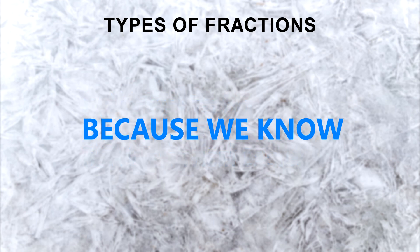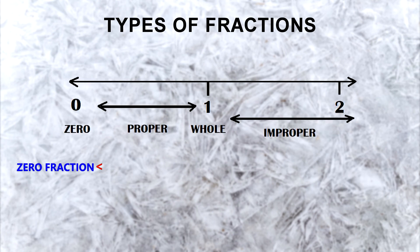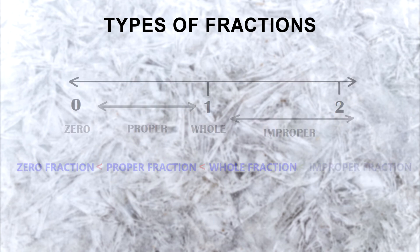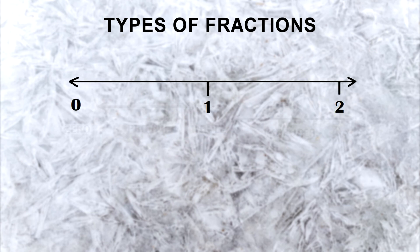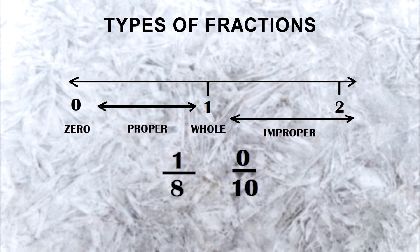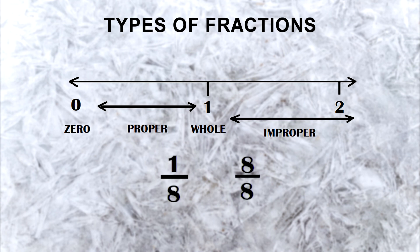Because we know that a zero fraction is always less than a proper fraction, and a proper fraction is always less than a whole fraction, and a whole fraction is always less than an improper fraction. Let's do a few comparisons to get the hang of it. Here we have 1 over 8 and 0 over 10. Since 1 over 8 is a proper fraction and 0 over 10 is a zero fraction, 1 over 8 is greater than 0 over 10.